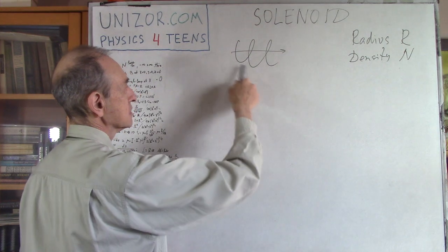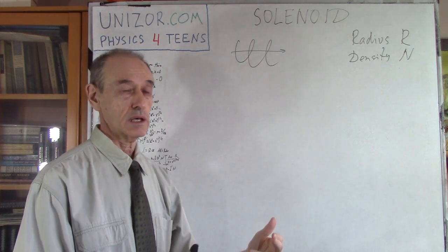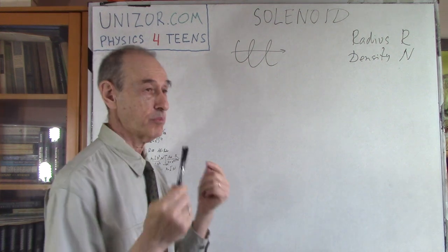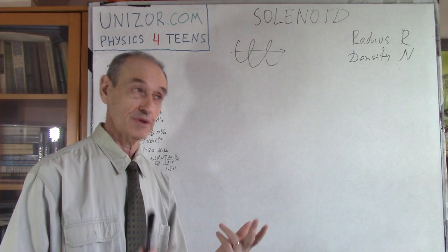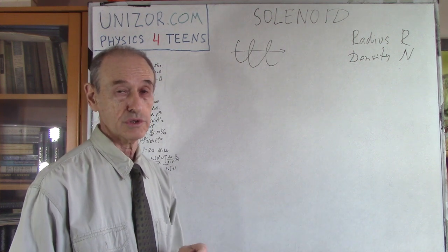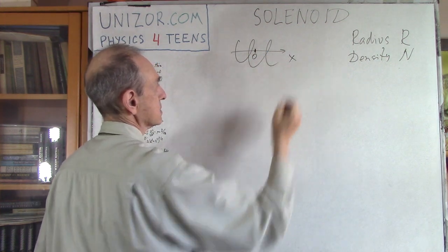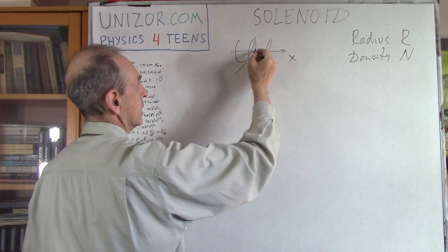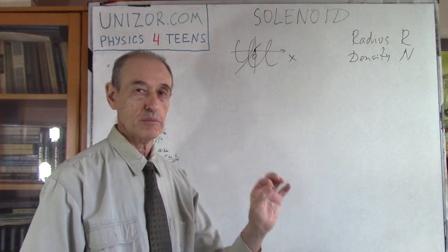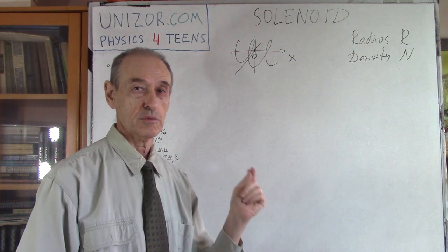I will position this solenoid so that its axis coincides with the x-axis in my coordinate system. The point where I will calculate the magnetic field intensity will be the origin of coordinates, x = 0. So this is the zero point, and the solenoid stretches along the x-axis.